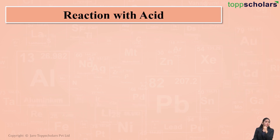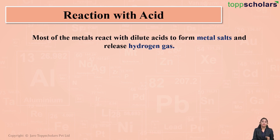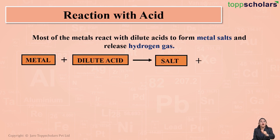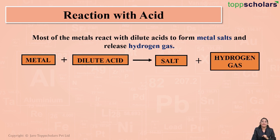How do metals react with acids? Metals generally react with dilute acids and form metal salts along with the release of hydrogen gas. The general reaction is: metal + dilute acid → metal salt + hydrogen gas. For example, zinc metal reacts with dilute hydrochloric acid to give zinc chloride, which is a salt, and hydrogen gas is liberated.